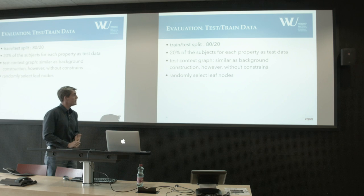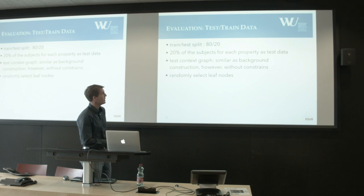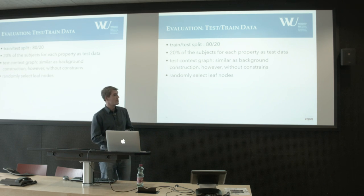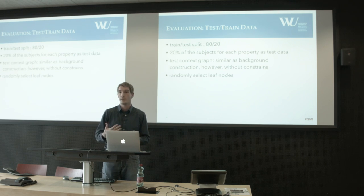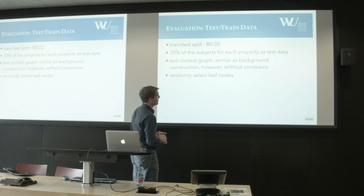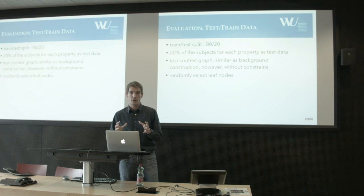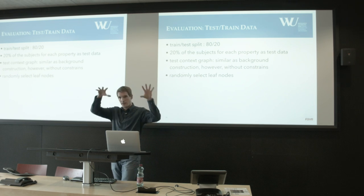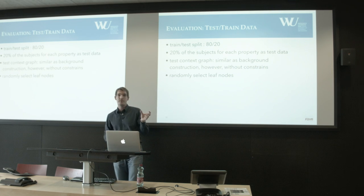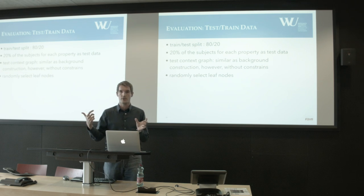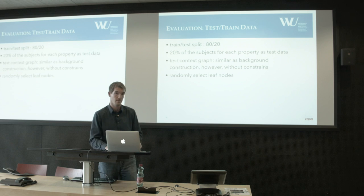For testing, we split the data 80-20: we took 20% of subjects for each property as a test dataset, and the remaining 80% to build the background knowledge base. From the 20% test subjects, we also built background knowledge but without constraints — selecting all possible candidates — which means the leaf nodes are very likely not represented in the background knowledge, avoiding bias.